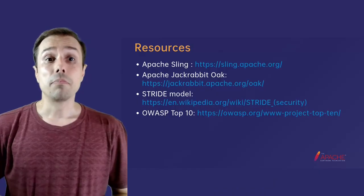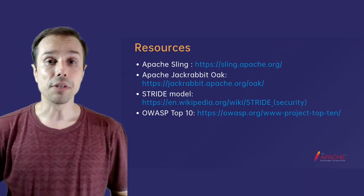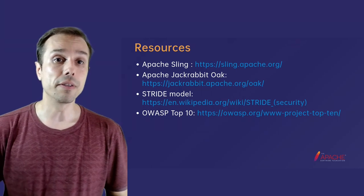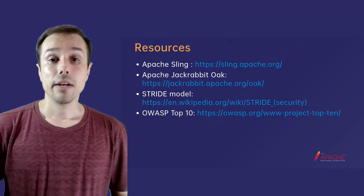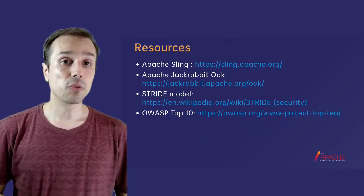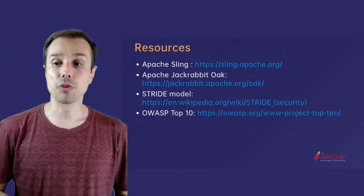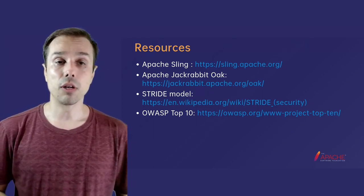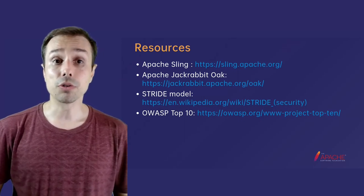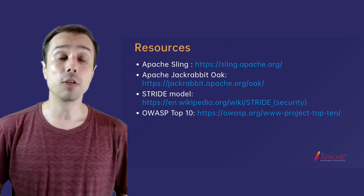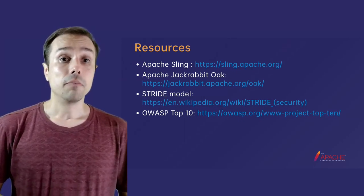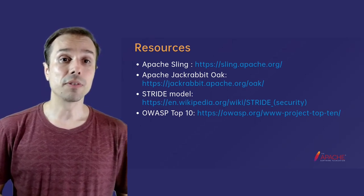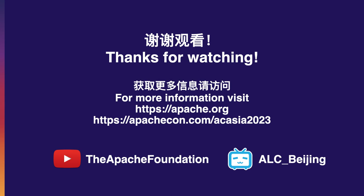This concludes the demo. To wrap up, I'm going to leave you with some resources about Apache Sling and Apache Oak, which are the implementations used in this presentation; the STRIDE model as a useful tool for creating threat models for your application; and the OWASP Top 10, which are the vulnerabilities most often encountered in web applications. With that, I thank you for your attention and hope that you have some good takeaways from my presentation.